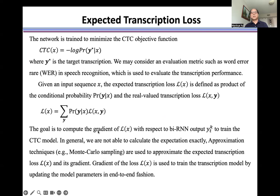The goal is to compute the gradient of L(x) with respect to bi-RNN output y_tk to train the CTC model. In general, we are not able to calculate the expectation exactly. Approximation techniques such as Monte Carlo sampling are used to approximate the expected transcription loss L(x) and its gradient.